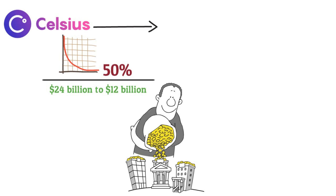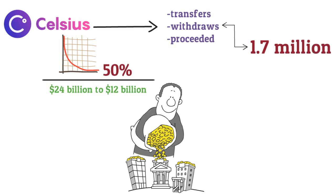And so, Celsius decided to halt transfers and withdrawals and proceeded to lock all 1.7 million users out of their accounts, unable to access their funds. This lockdown was initiated sometime around June and is still in play.